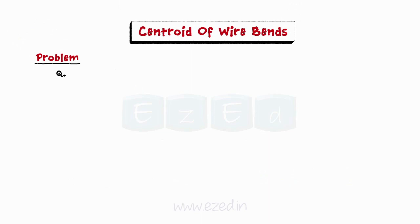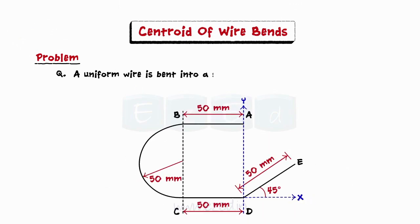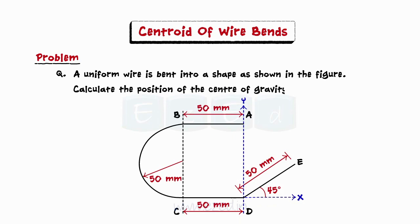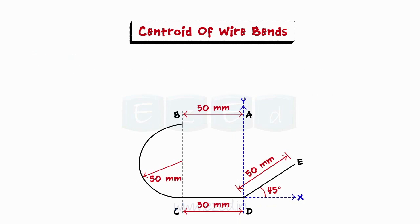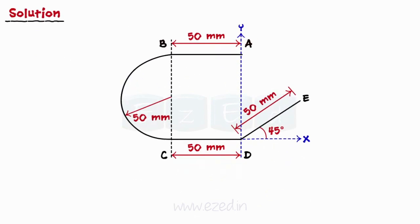Let us now take a look at some solved problems. Consider the following problem: a uniform wire is bent into a shape as shown in the figure. Calculate the position of the center of gravity of the wire. The wire bend can be obtained by adding two straight portions AB and CD, a semicircular portion BC, and a straight inclined portion DE. The centroids of the four parts can be marked using the basic formulae for regular lines. We will now mark the centroids of these four parts, G1, G2, G3, and G4, as shown.